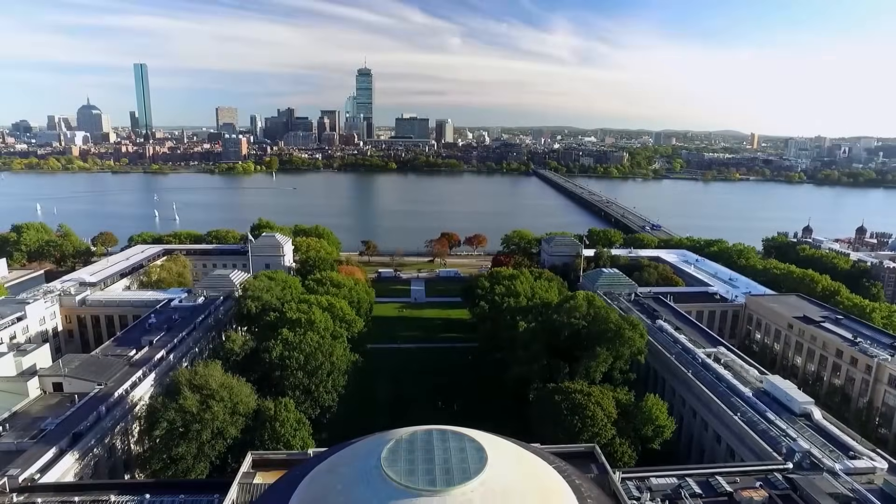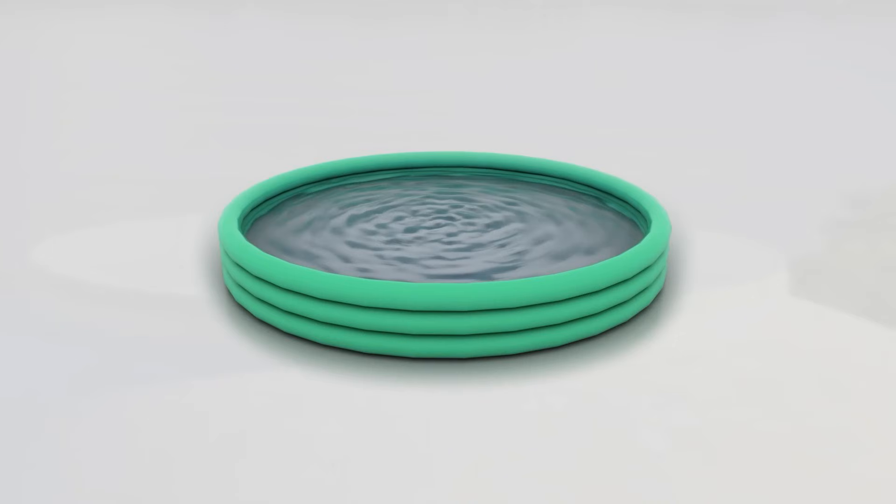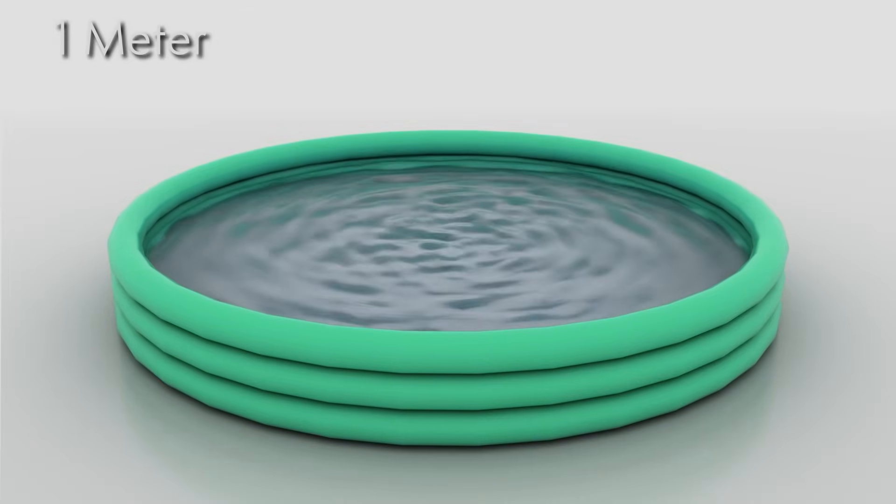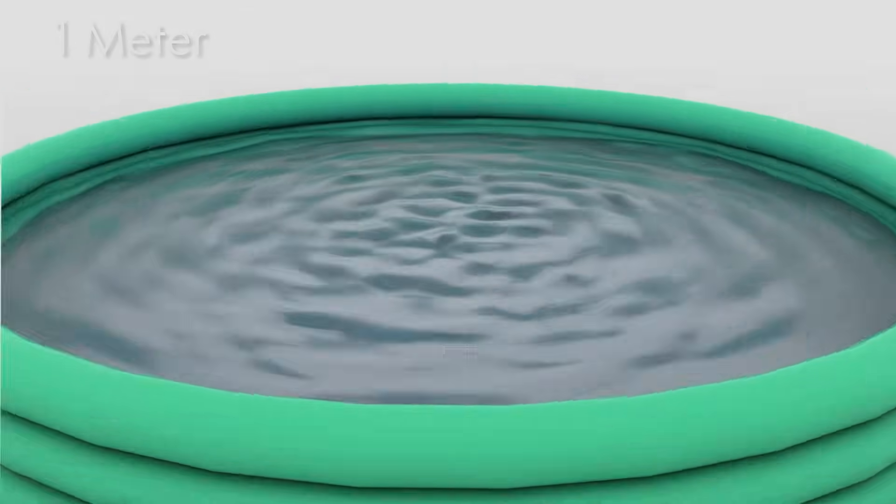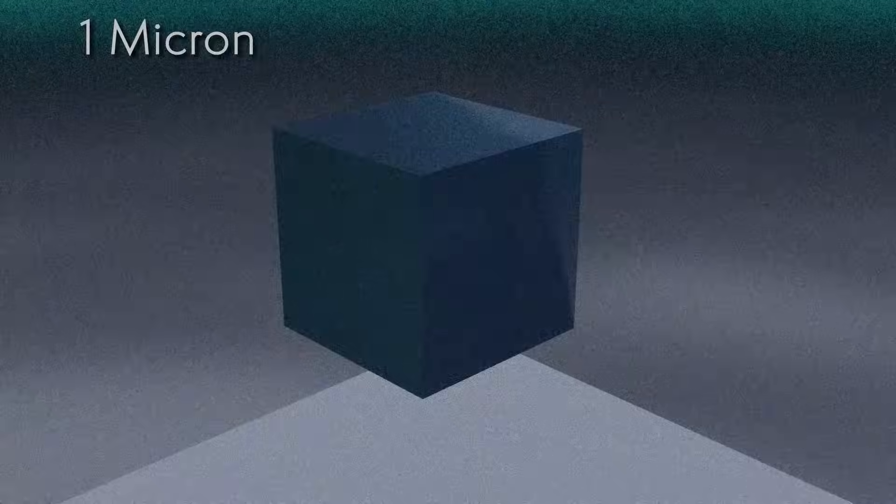Let's add a fictional child's pool of water on top of the MIT dome, with a scale of one meter. Diving into its water, three orders of magnitude in, we reach a cube of water with a scale of one millimeter. Three more orders of magnitude in, we reach a scale of one micrometer.